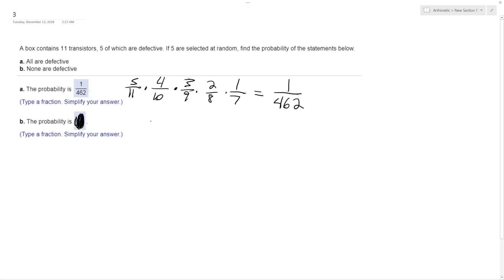That's similar, except in this case, there's six transistors that are not defective. So it's six out of 11 times five out of 10 times four out of nine times three out of eight times two out of seven. We're still picking five at random. And if you simplify this, this is one over 77.